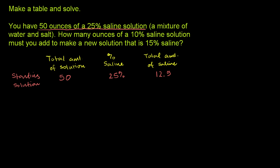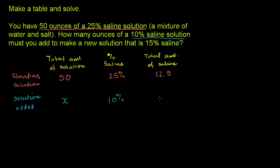Now let's talk about what we're going to add — the solution added. They say how many ounces of a 10% solution, so we don't know how many ounces we're going to add. That's what we have to solve for. Let's call that x. We don't know how much we're going to add, but we do know it is a 10% saline solution. The total amount of saline in x ounces of this solution is going to be 0.1x, or 10% of x.